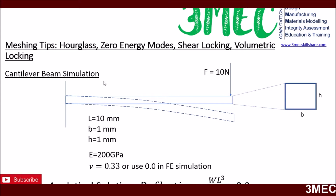What I'm going to do today is simulate a cantilever beam with a length of 10 mm, a square cross section with b and h equal to 1 mm, and steel properties. The analytical solution, which doesn't account for Poisson's ratio, gives a tip displacement of 0.2 mm. I'll show you how to reach that using different element types.